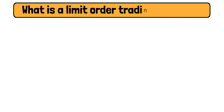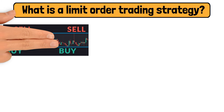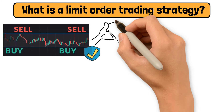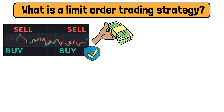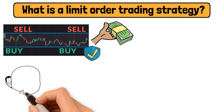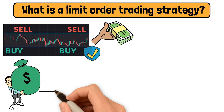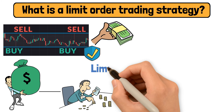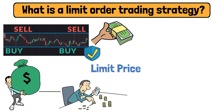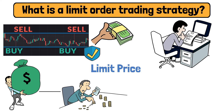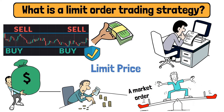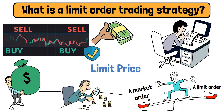What is a limit order trading strategy? A limit order trading strategy is an order to buy or sell a security at a specific price or better. It comes with a specification of the maximum price to be paid or the minimum price to be received. This is why it's called a limit price. Let's go on to backtest two trading strategies to show you the difference between a market order and a limit order trading strategy.